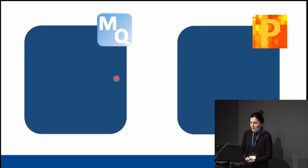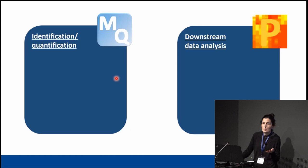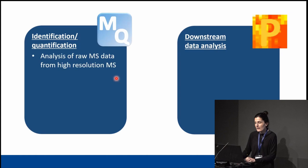MaxQuant is responsible for the identification and quantification of peptides, proteins, and PTMs. Perseus is responsible for the downstream analysis of the output tables of MaxQuant. More specifically, MaxQuant will analyze the raw mass spectrometry data that you get from mass spectrometers.